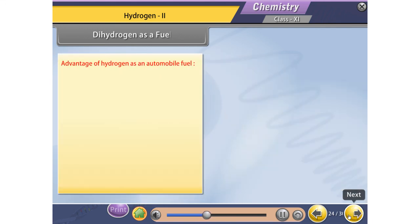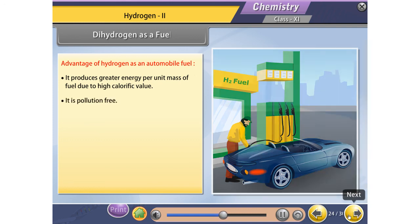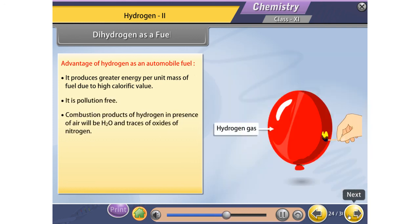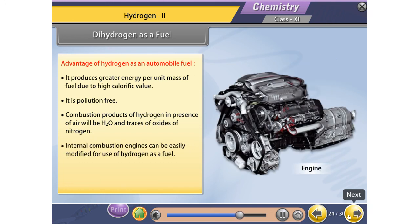Advantages of hydrogen as an automobile fuel: It produces greater energy per unit mass of fuel due to high calorific value. It is pollution-free. Combustion products of hydrogen in presence of air will be H2O and traces of oxides of nitrogen. Internal combustion engines can be easily modified for use of hydrogen as a fuel.